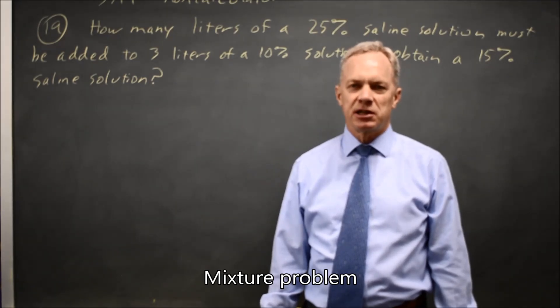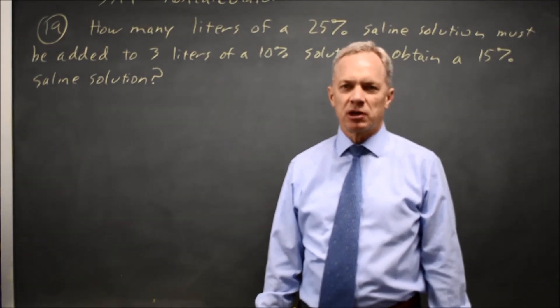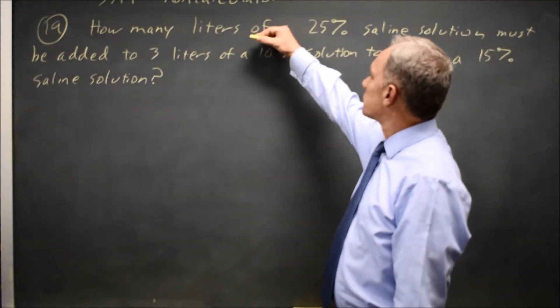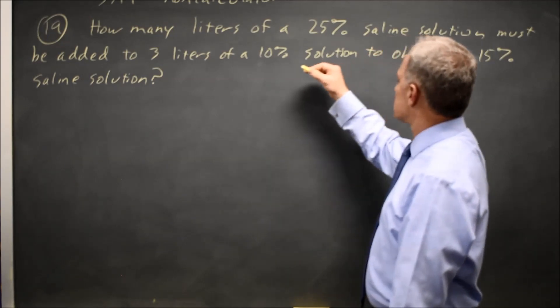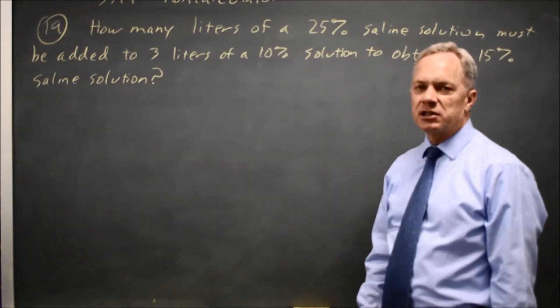This is non-calculator question number 19. College Board gives us a mixture problem where they're asking how many liters of 25% saline solution do you have to add to 3 liters of a 10% solution to obtain a 15% solution.